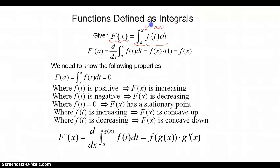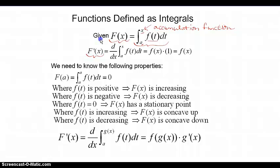We're accumulating area in the plane trapped between the function little f and the horizontal axis, starting at some constant value A and stopping wherever they tell us to. So this is truly the accumulation function. We understand from Fundamental Theorem Part 2 that the derivative of that function is just the integrand function.